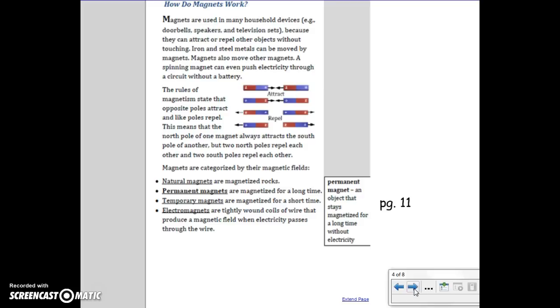Magnets are used in many household devices, for example, doorbells, speakers, and television sets. Because they can attract or repel other objects without touching, iron and steel metals can be moved by magnets. Magnets also move other magnets.